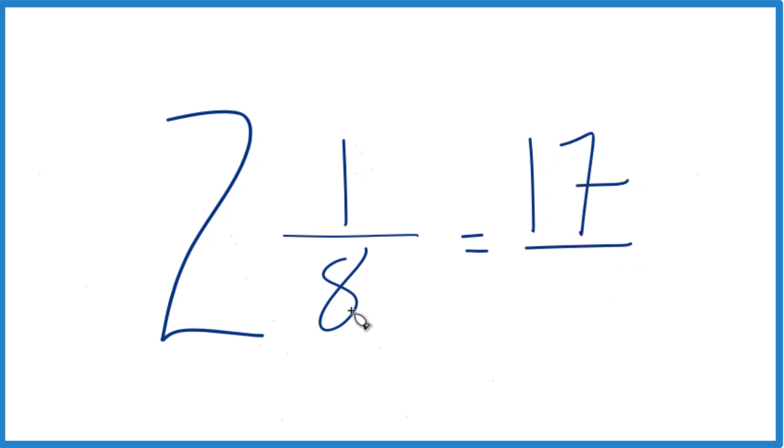Then we just take the 8, that's the denominator across, keep it the same. 17/8, that's the improper fraction for the mixed number 2 and 1/8.